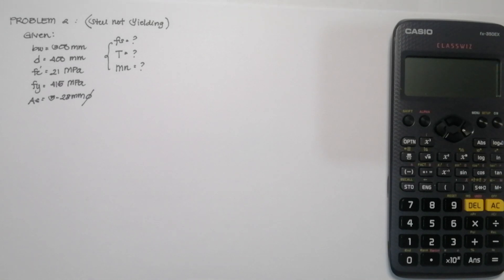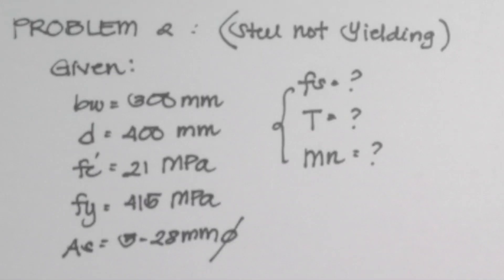So in here, I summarize the given. We have a 300mm base of the beam, an effective depth of 400mm, a compressive strength of 21 MPa, the yield strength of our reinforcements is 415 MPa, and our reinforcements are made up of 5-28mm diameter bars.